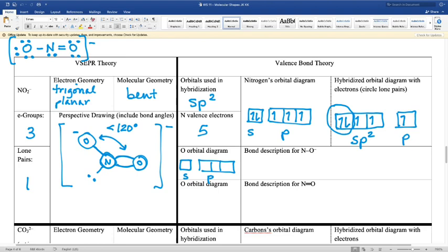So this oxygen has a negative one formal charge. This is an ion because there's an extra electron. We have to give the electron to someone, and so the formal charge tells us who to give it to.